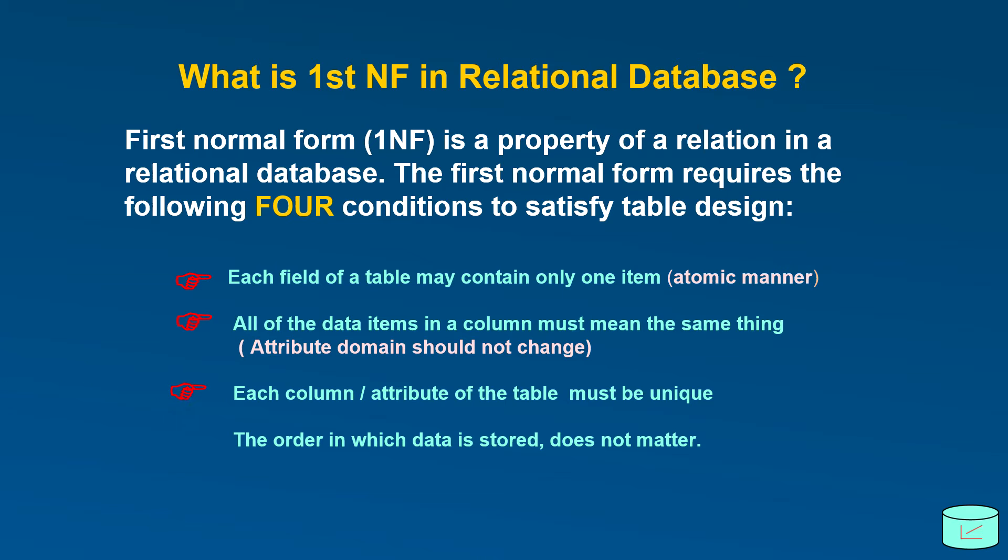Number three, each column or attribute of the table must be unique. Number four, the order in which data is stored does not matter.